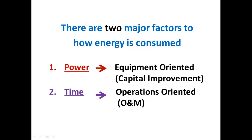Power tends to be equipment-oriented, so affecting the amount of power used typically involves capital improvements and retrofit projects so that new equipment uses less energy because it's more efficient. When we look at time, we look at an operationally oriented measure, which may involve our O&M budget as opposed to our capital budget. We'll look more at the dynamics of this in the presentation on actions.